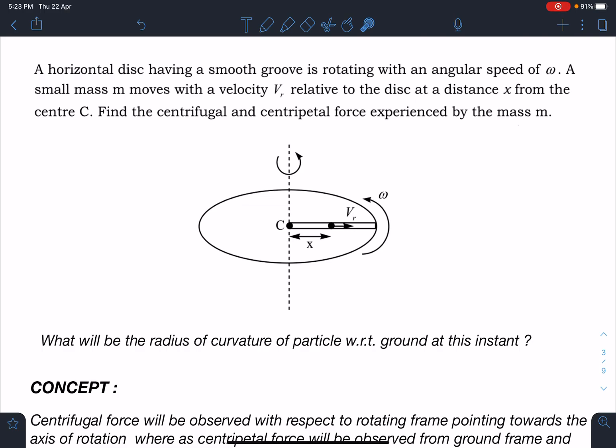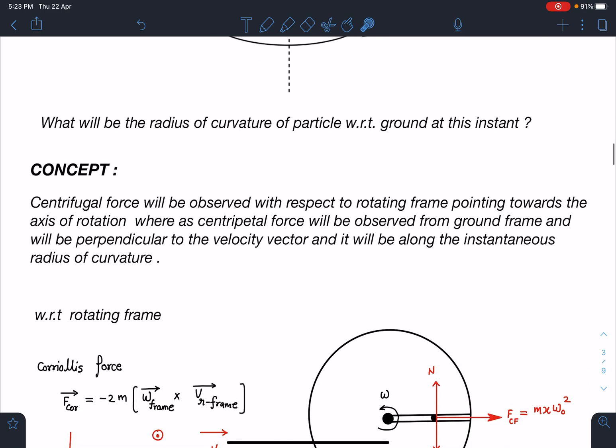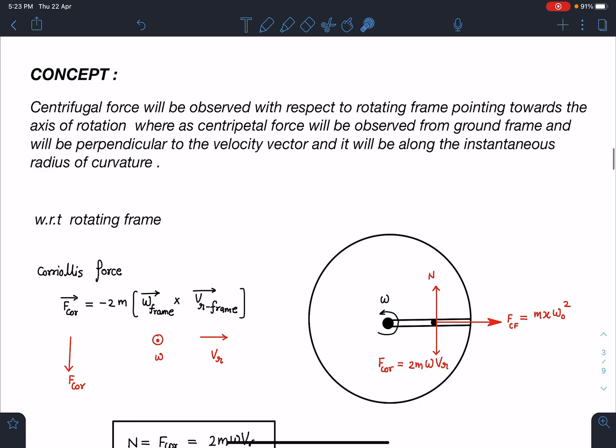Concept wise, we can say centrifugal force will be observed with respect to rotating frame and it will be pointing towards the axis of rotation, whereas the centripetal force will be observed from the ground frame and it will be perpendicular to the velocity vector and it will be along the instantaneous radius of curvature.